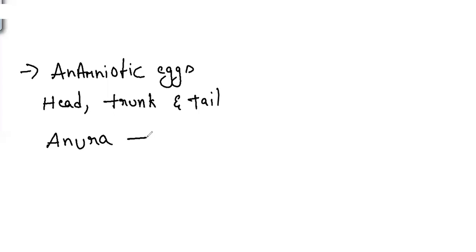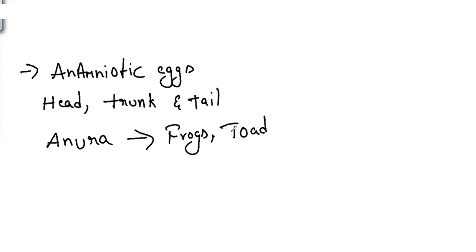Amphibians without a tail are called Anura — for example, frogs and toads. However, a tail can be seen in their larval stage. The larval stage of the frog is called the tadpole larva, which is very similar to fishes because both tadpole larvae and fishes have the lateral line system.